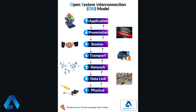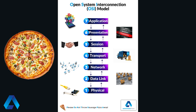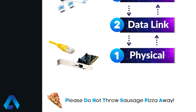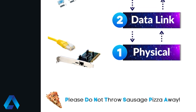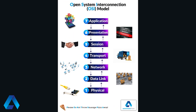Want an easy way to remember the OSI model? This picture shows the seven layers with corresponding images to help you remember what each of the layers represents. And to help you remember them in order, you can think of the sentence: 'Please do not throw sausage pizza away,' where the P in 'please' corresponds to the physical layer, and the A in 'away' corresponds to the application layer.